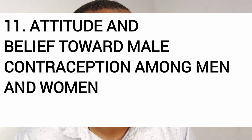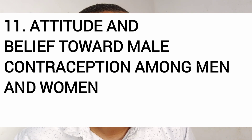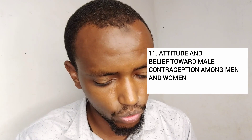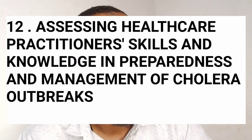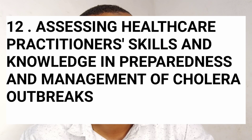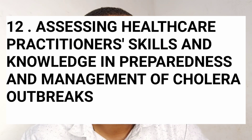Number eleven: attitudes and beliefs toward male contraception among men and women. What are the attitudes — how do men and women feel about male contraception? Number twelve: skills and knowledge on preparedness and management of a cholera outbreak among general practitioners and nurses. You want to find out whether GPs and nurses have the necessary skills to tackle a cholera outbreak.